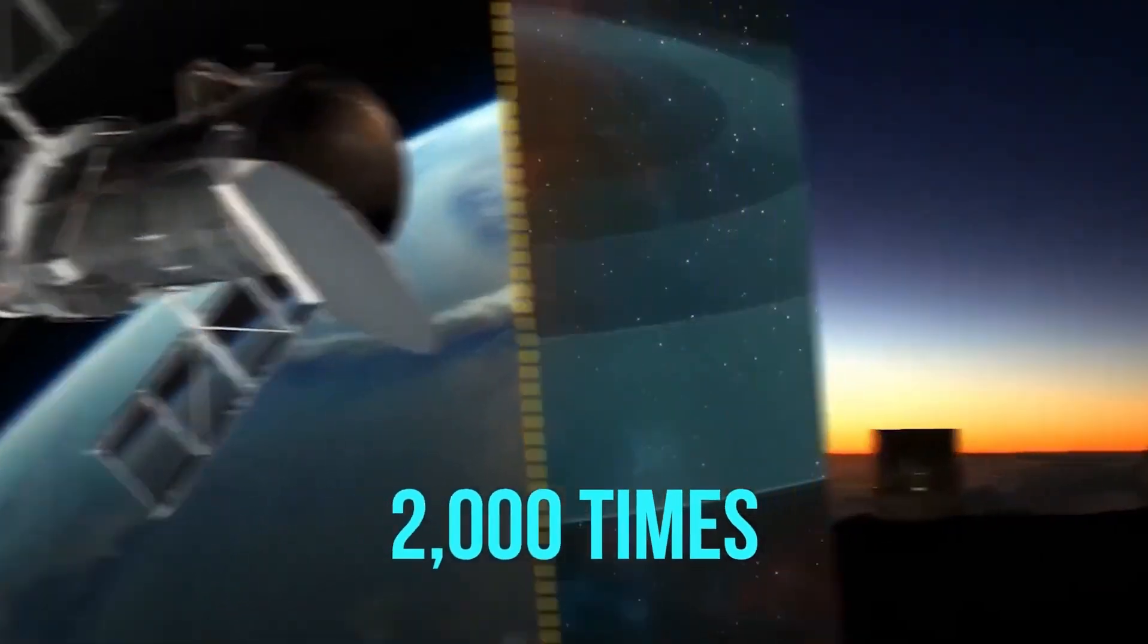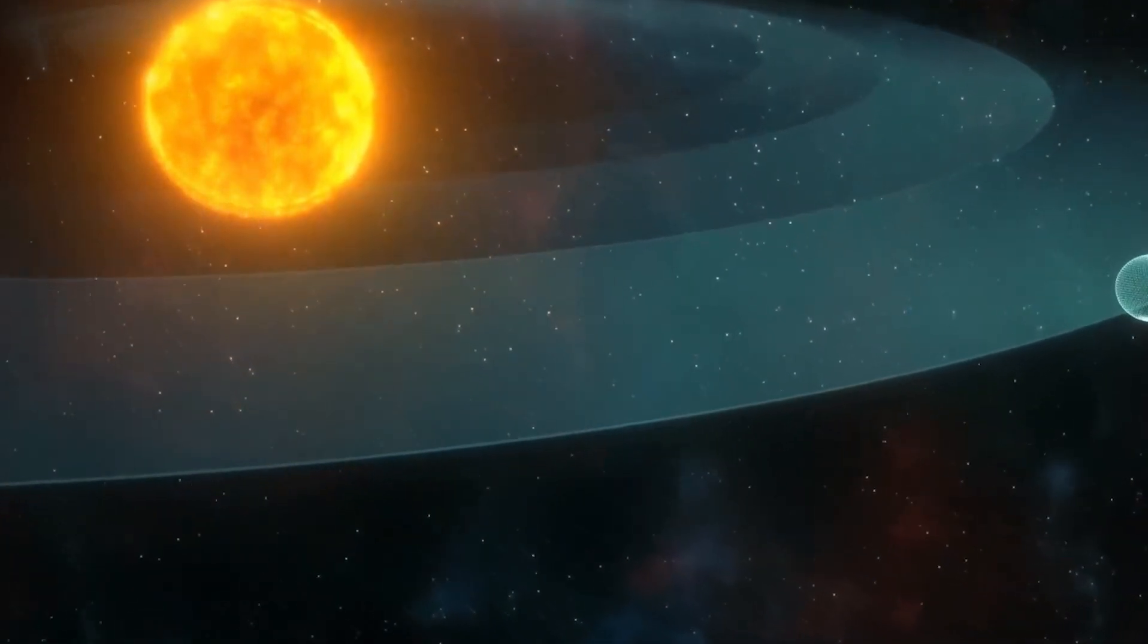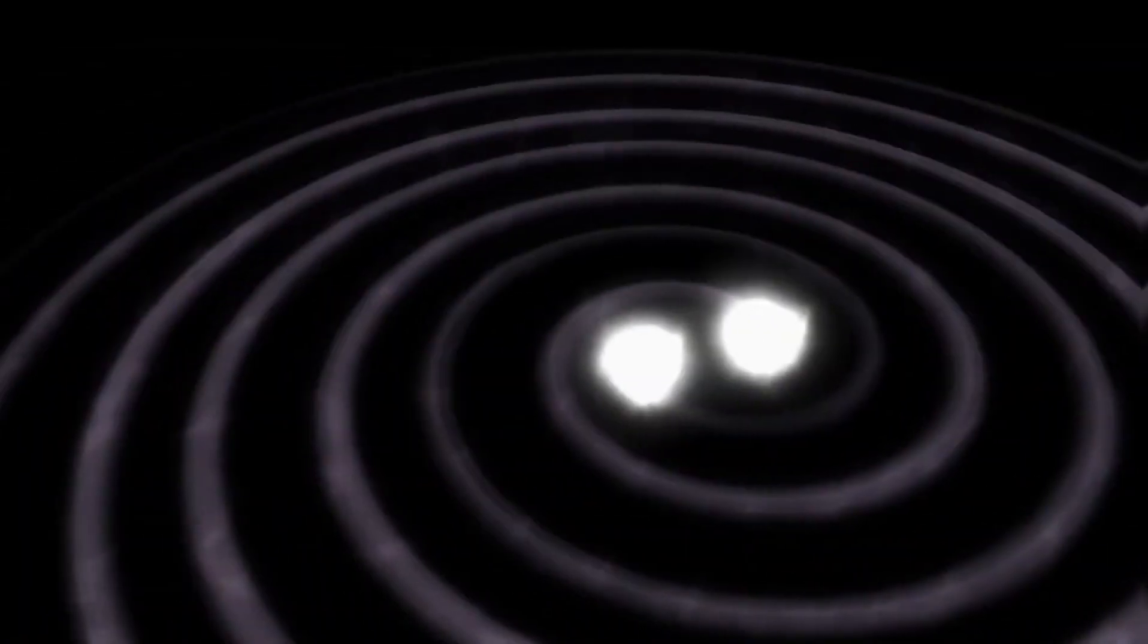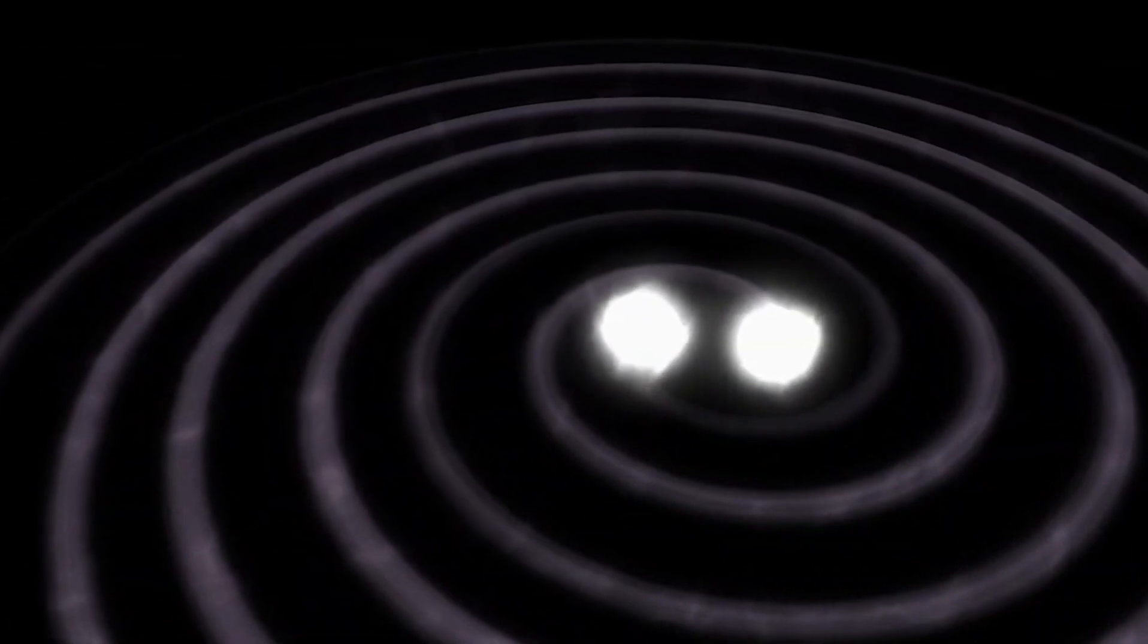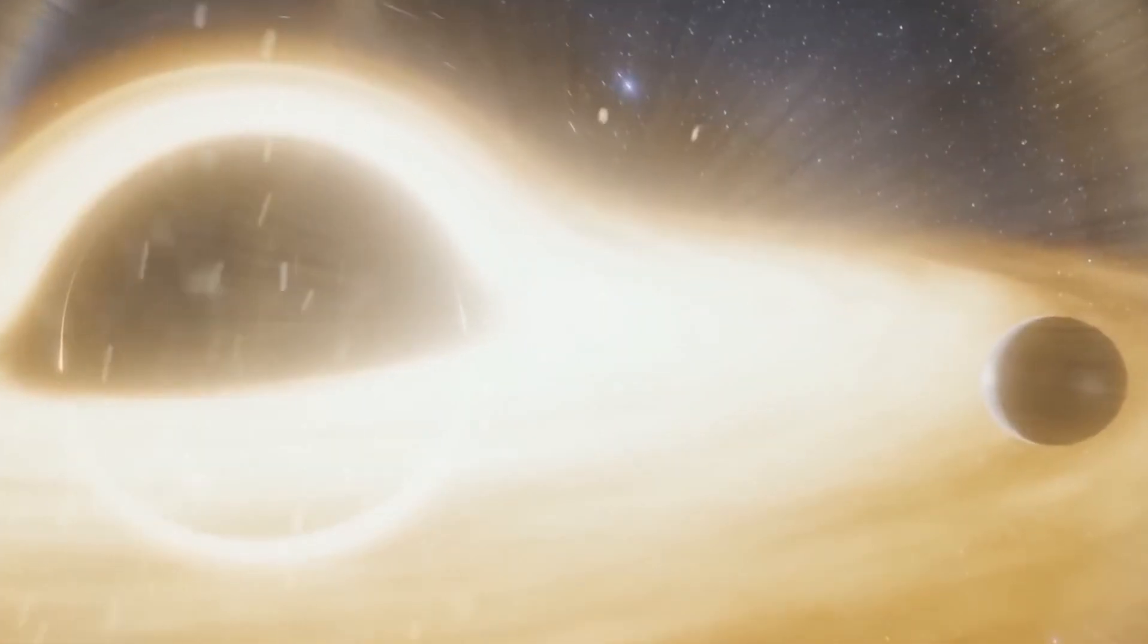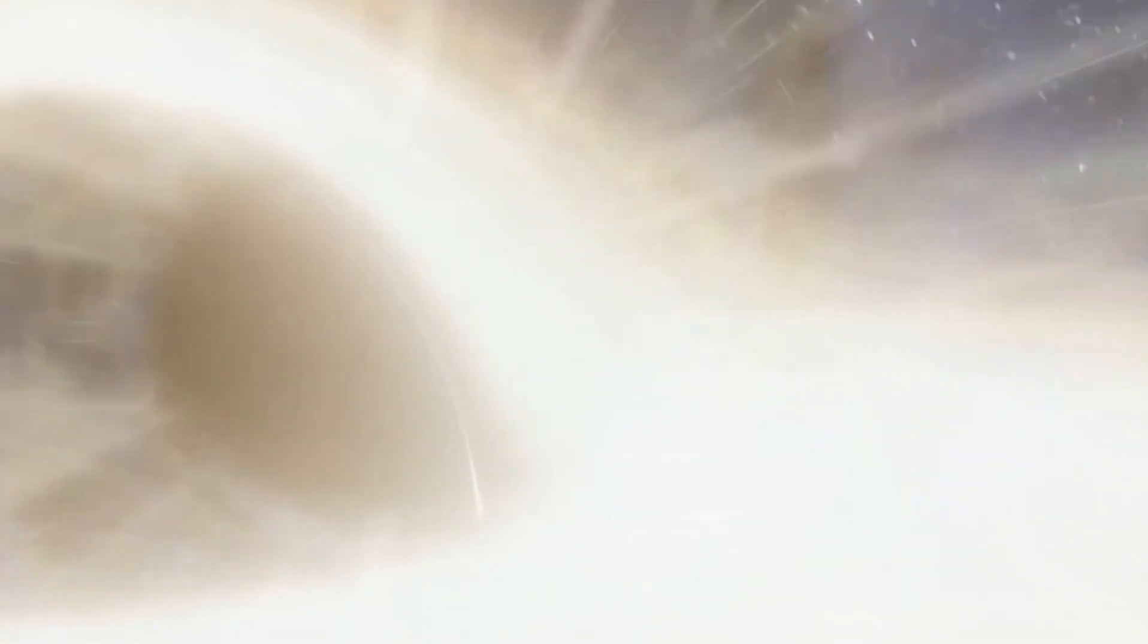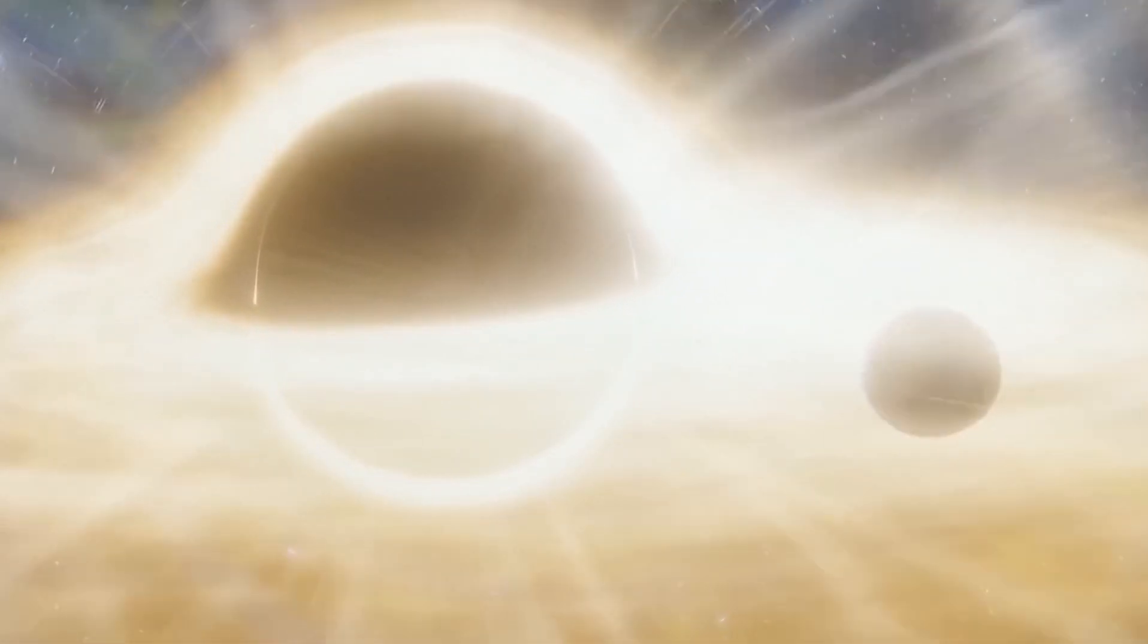Beyond Mars lies the asteroid belt, a region populated by debris and objects of various sizes and shapes. The largest asteroid, Ceres, has a surface slightly larger than Argentina and a weight about 1% of the moon's. The total weight of the asteroid belt is 25 times less than that of the moon.